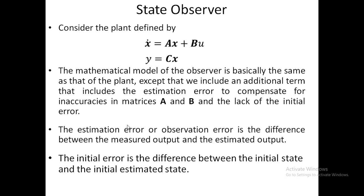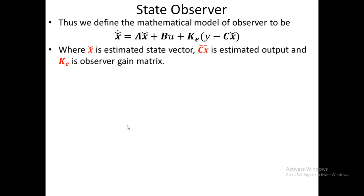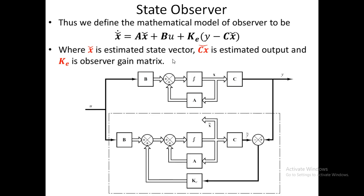The initial error is the difference between the initial state and the initial estimated state. We define the mathematical model of the observer as: x-hat-dot equals A·x-hat plus Bu plus Ke·(y_measured minus y_estimated), where x-hat is the estimated state vector, C·x-hat is the estimated output, and Ke is the observer gain matrix.